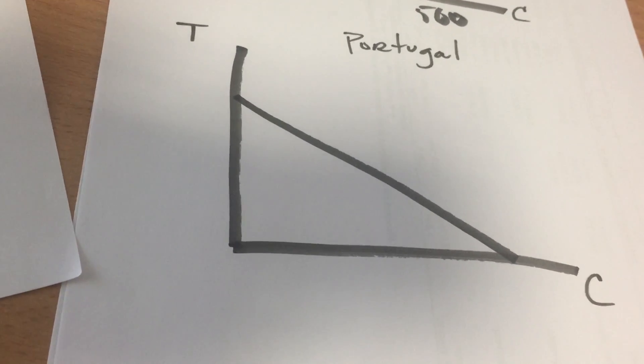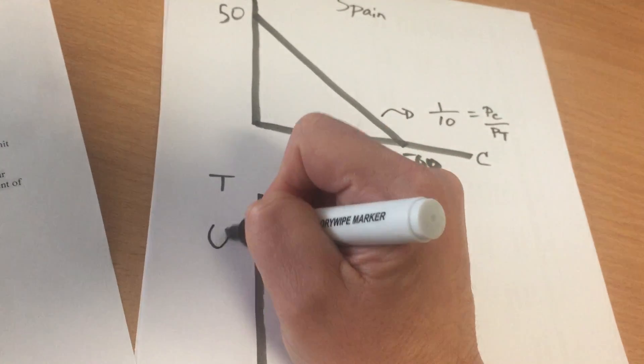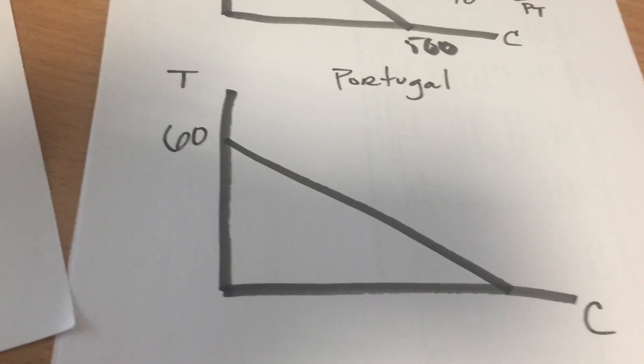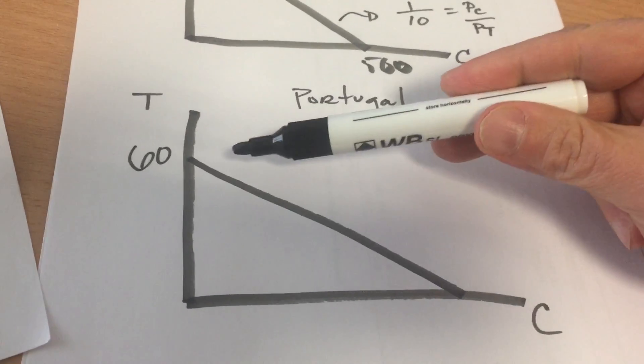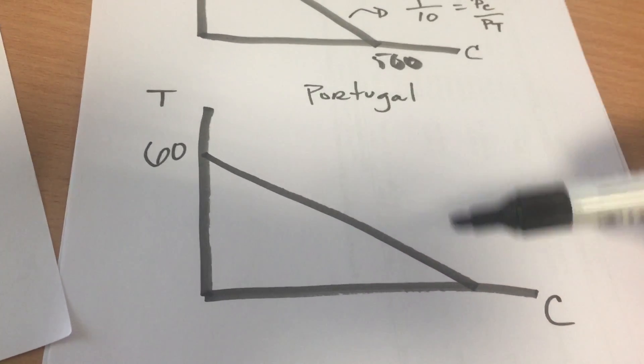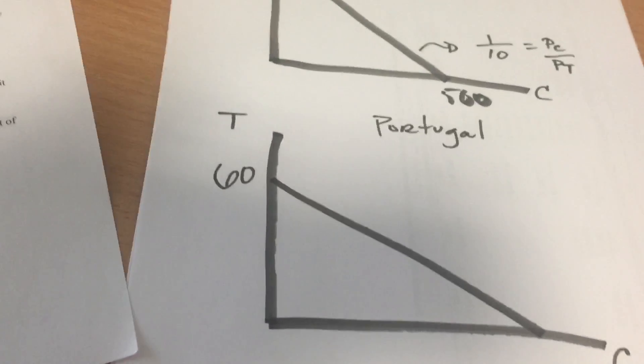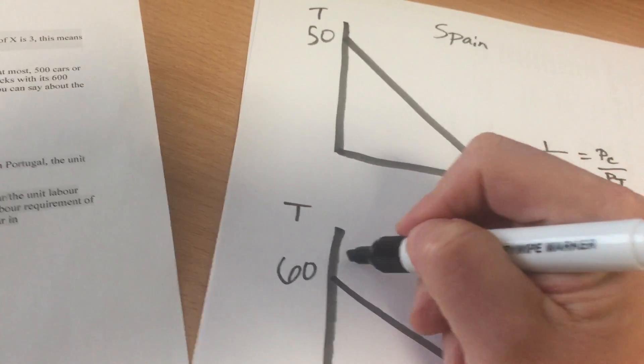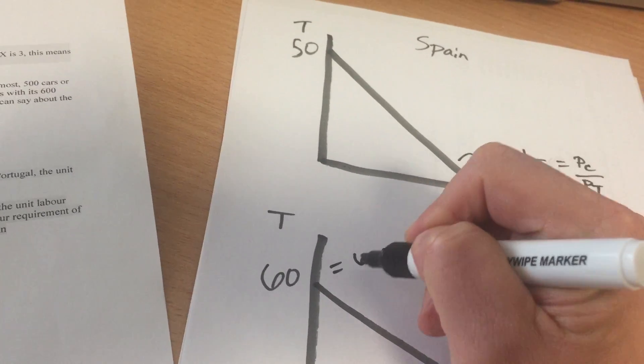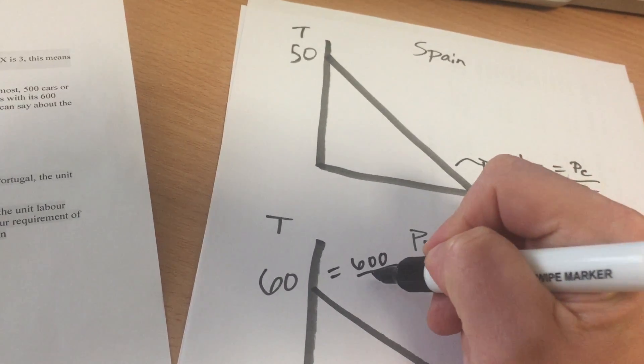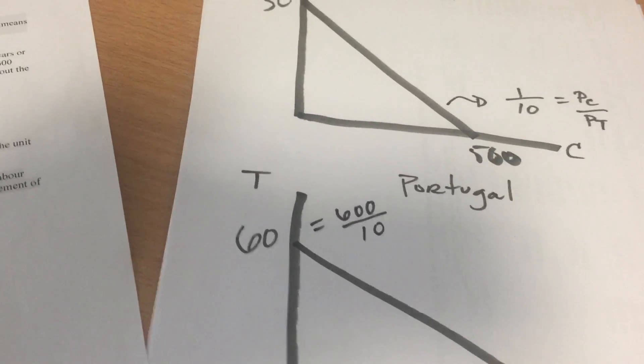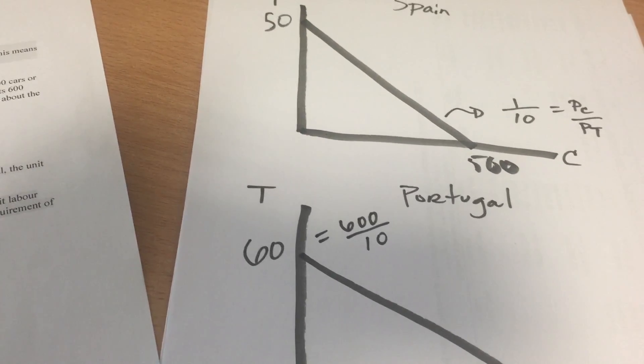Portugal can produce at most 60 trucks. And what we're saying is that their slope of their line has to be less than one-tenth. So what else do we know? That 60 trucks is produced. They have 600 units of labor. Divide that by 10. So the unit labor requirement for a truck is 10.